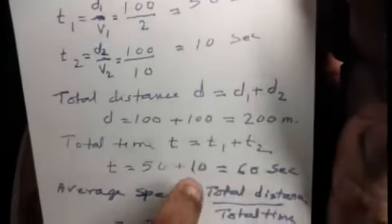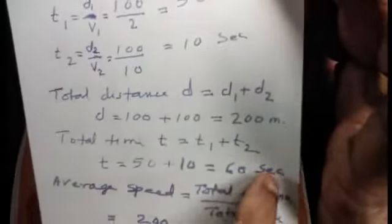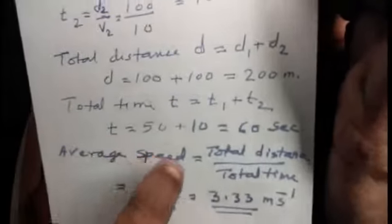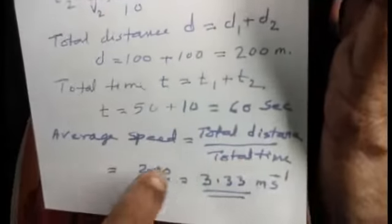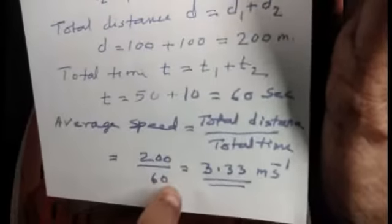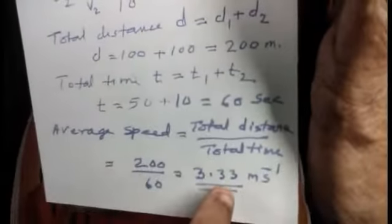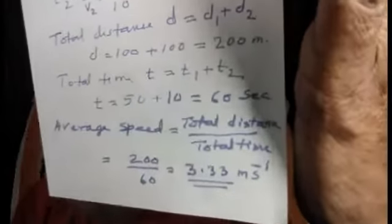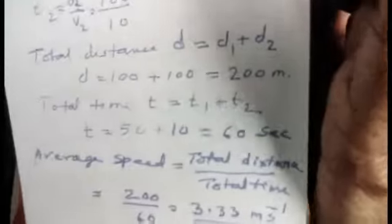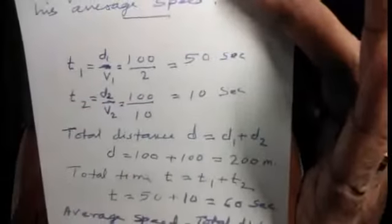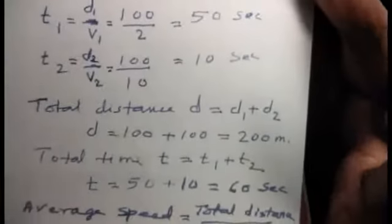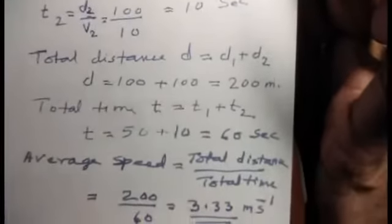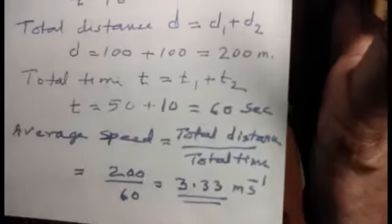Total time T equals T1 plus T2, that is 50 plus 10 equals 60 seconds. Average speed equals total distance by total time, that is 200 by 60, which equals 3.33 meters per second.